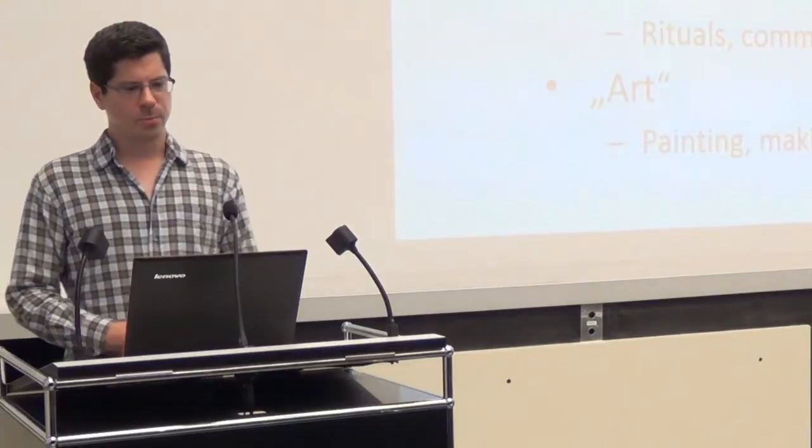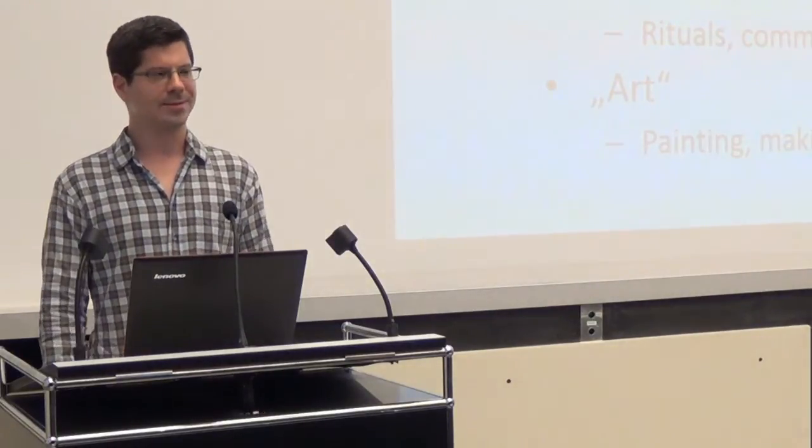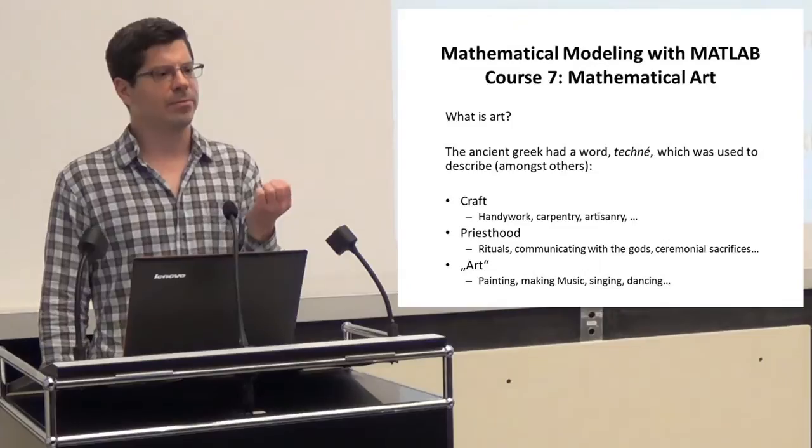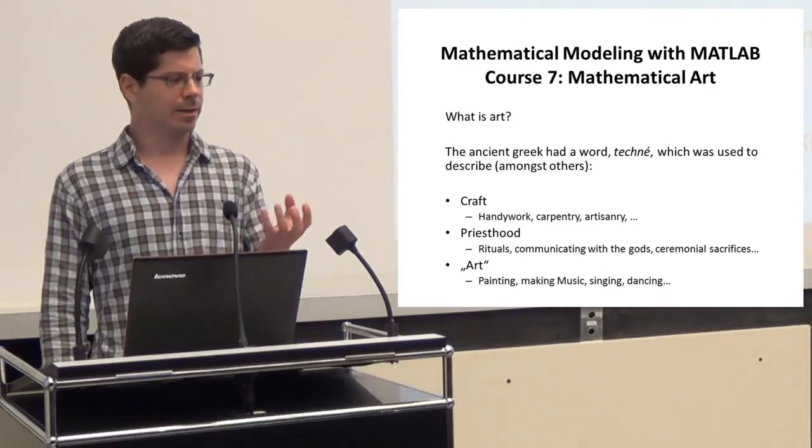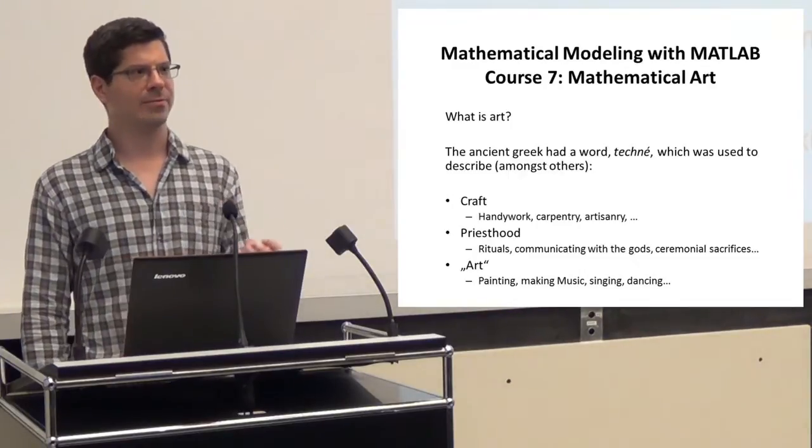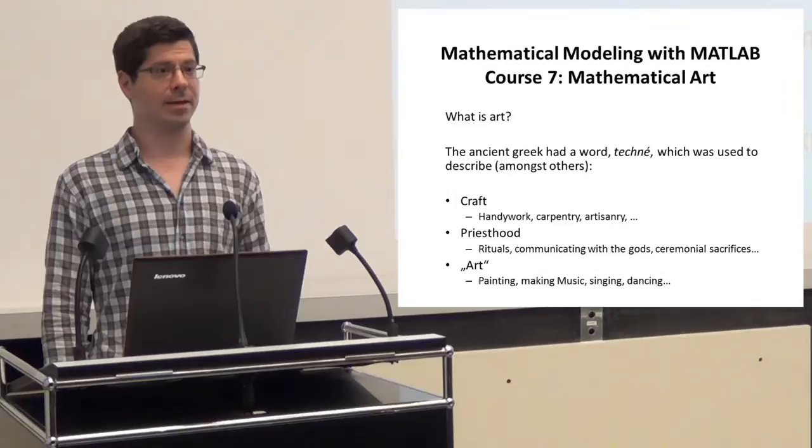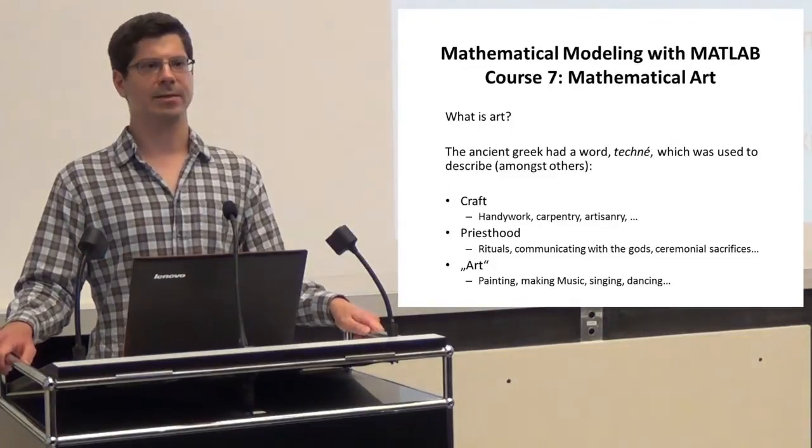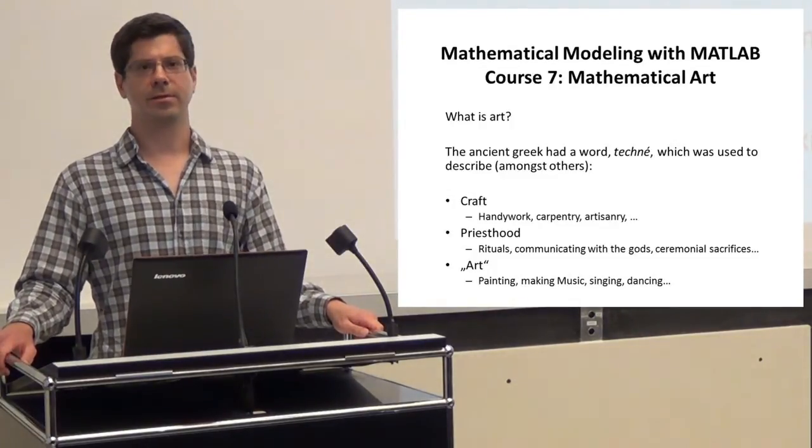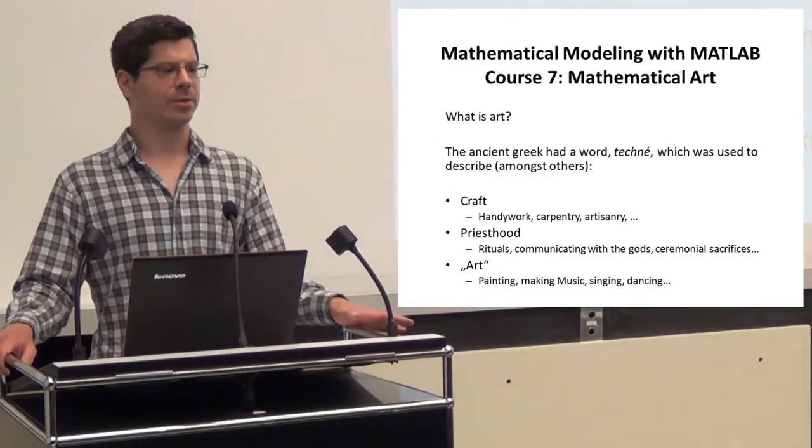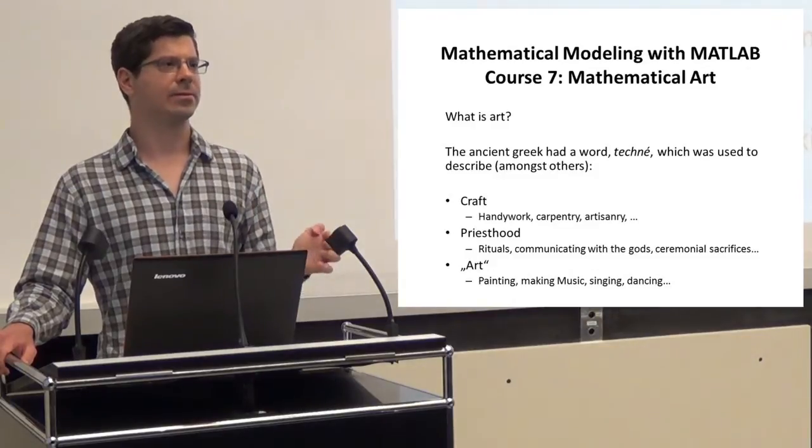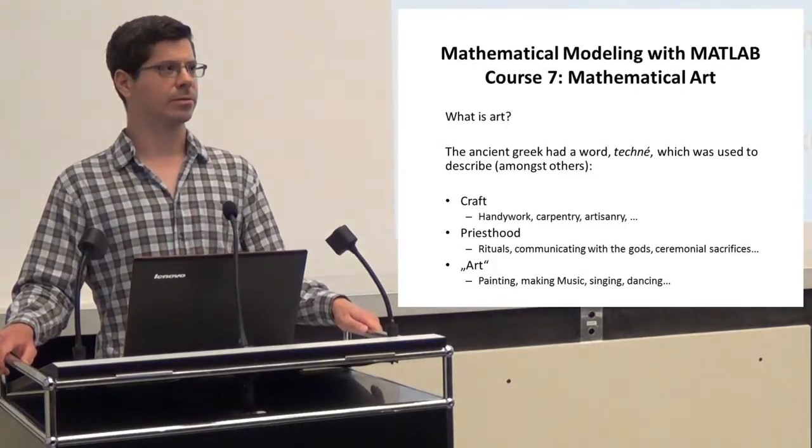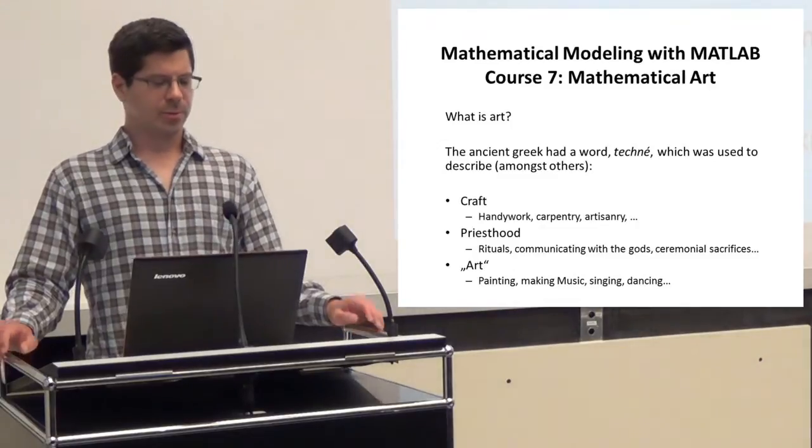The ancient Greek had a wonderful word which is called technē. It was used to describe crafts, like if you make a table, if you are a craftsman, a handyman, a carpenter, or anything like that. Or a cook. That's craft. That is technē. Technē means the ability of doing something. It was also describing priesthood. Because the priests had an ability to talk to the gods and interpret their will, which was an important part of the Greek societies.